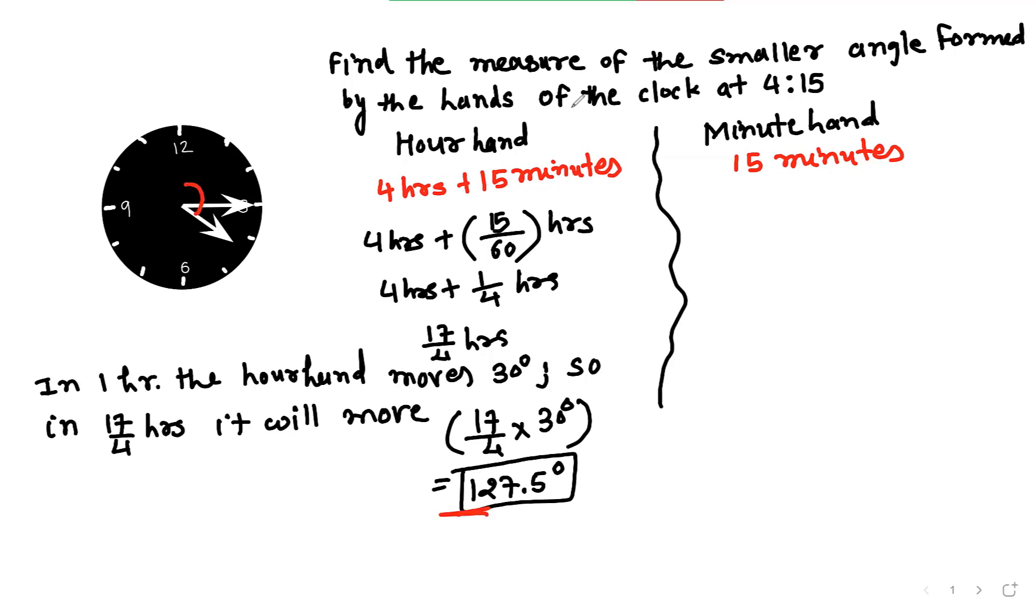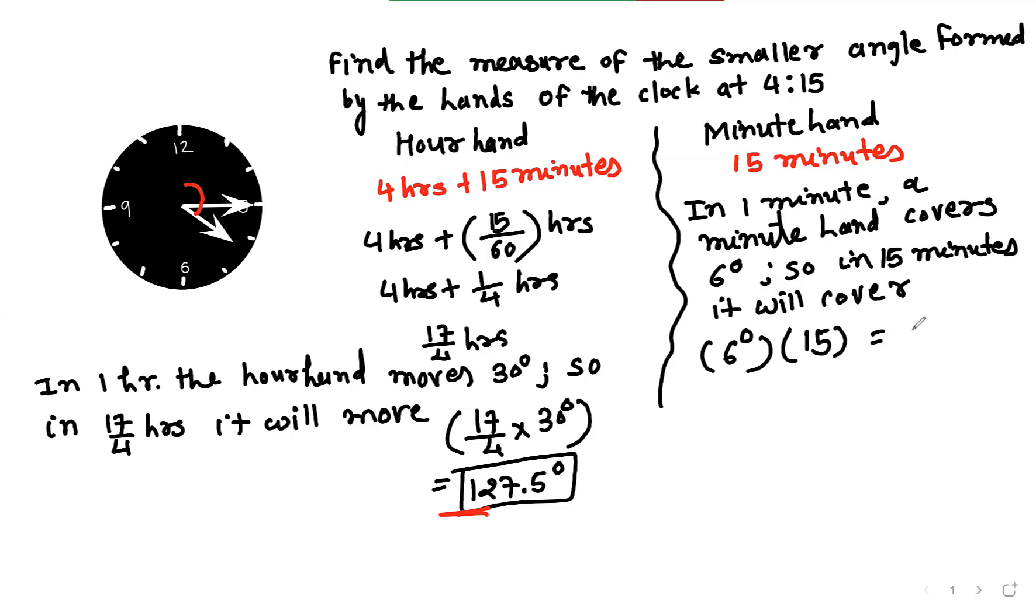Now let's look at the minute hand. We don't have to convert anything because it's already in minutes. We know that in one minute, a minute hand covers 6 degrees. So in 15 minutes, it covers 6 times 15, which equals 90 degrees. This angle starts from 12 and goes to here, 90 degrees.